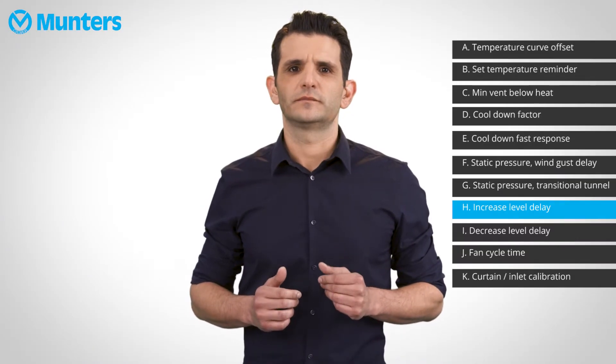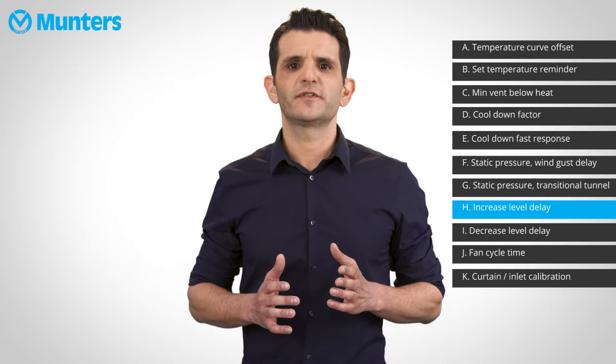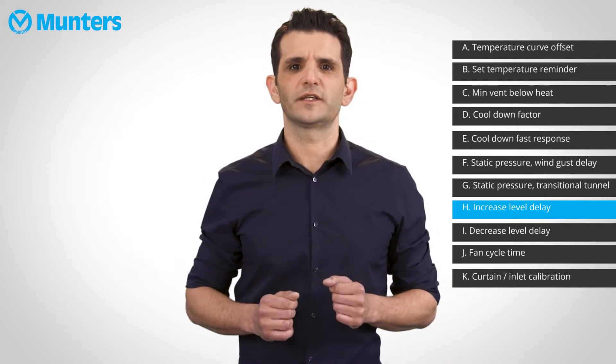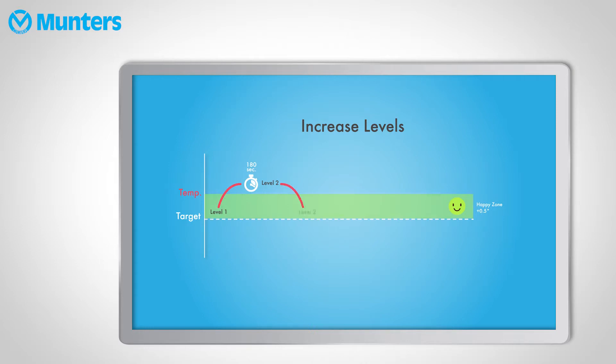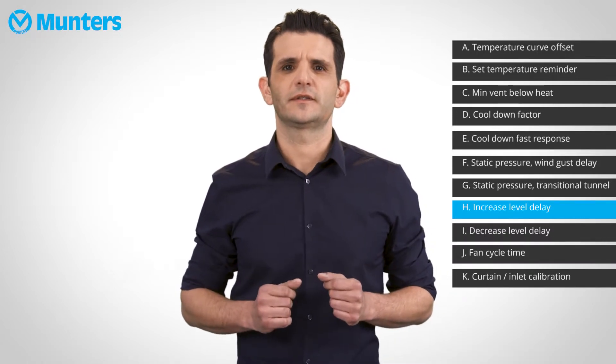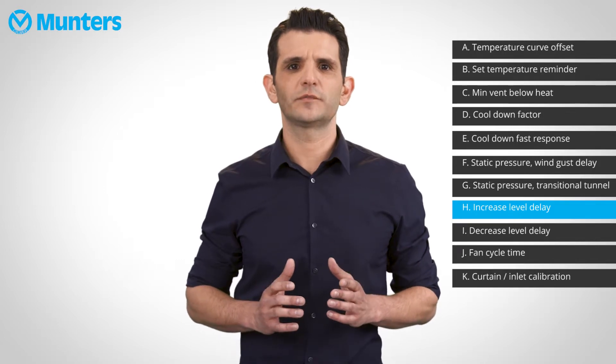Let's talk some more about ventilation. Increased delay time determines the amount of time the controller will wait before increasing ventilation when the temperature goes above the happy zone. The default for this parameter is 180 seconds. It is a bit long but is designed in order to protect young animals from being exposed to too much air. As the animals grow, this parameter should be shortened. We recommend setting it to 90 seconds throughout the flock. You should never go below 30 or 40 seconds because that is just too short for any temperature to stabilize in the house, and will result in excessive level movement and even heaters turning on unnecessarily.